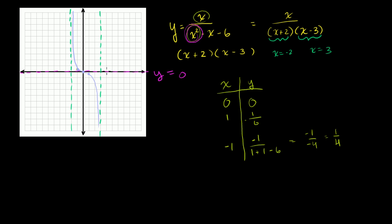Let's try x equals 4: we have 4 over 16 minus 4 minus 6, which is 4 over 6, equal to 2 thirds. So the point (4, 2/3) is plotted. I have to approach the horizontal asymptote as we go further out — we're going to come up from negative infinity near x equals 3 and then curve back toward the horizontal asymptote as we approach positive infinity.